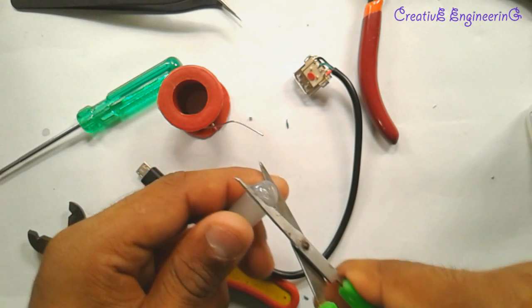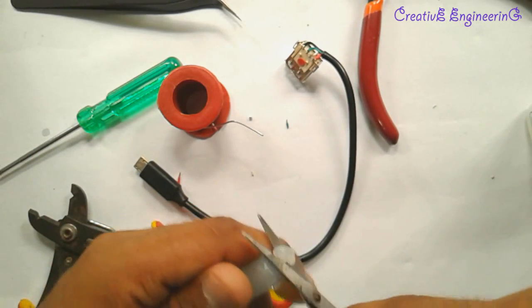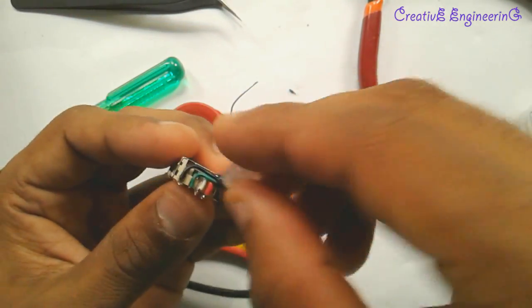This is hot glue. It easily protects the connections from damage. So first I cut it into small pieces like this, then place it above the bare connection.